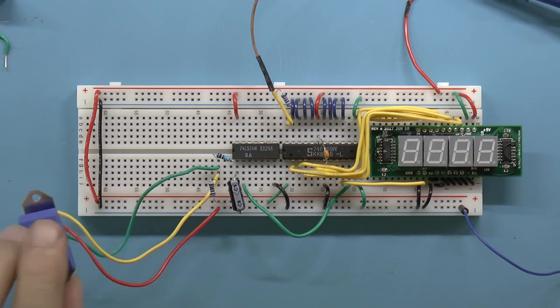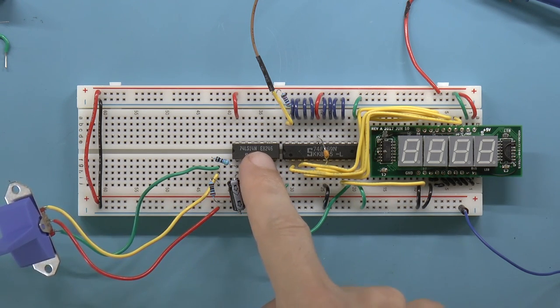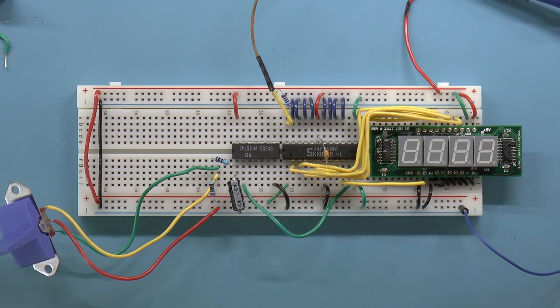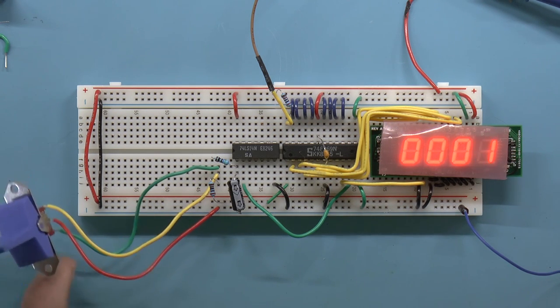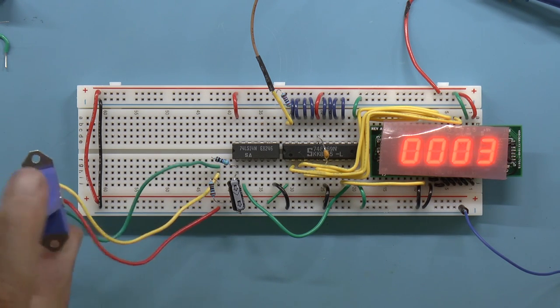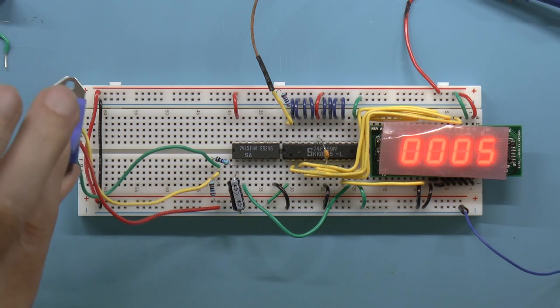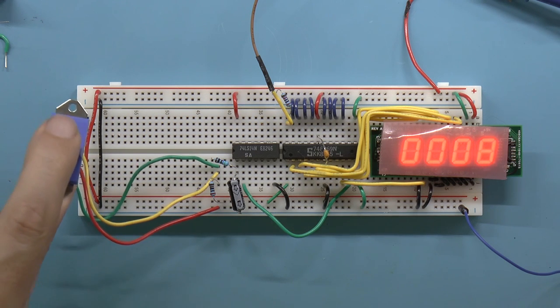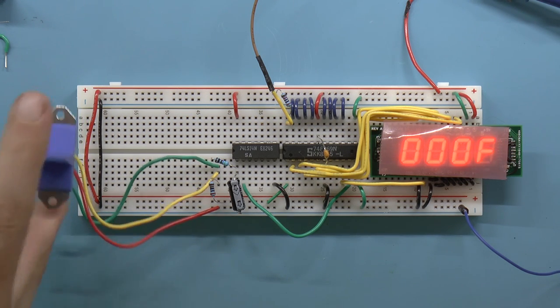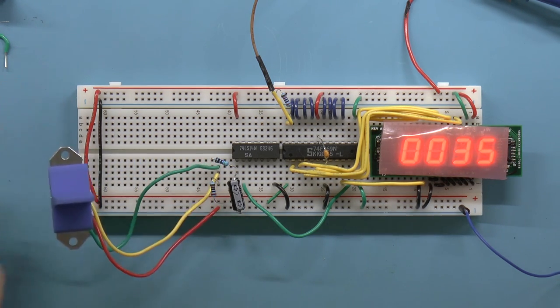Okay, I have a 7414 Schmitt trigger inverter hooked up now to my switch, and we're going to switch this on and see what happens. One, two, three, four, five. Excellent. It seems to work, and even when I do this rapidly. One, two, three, four, five. One, two, three, four, five. One, two, three, four, five, six. Excellent.